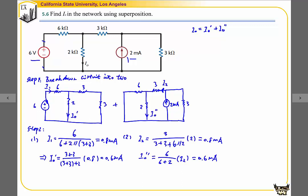Step 3: we're going to get the conclusion. I0 equals I0' plus I0'', which gives us 0.2 mA.